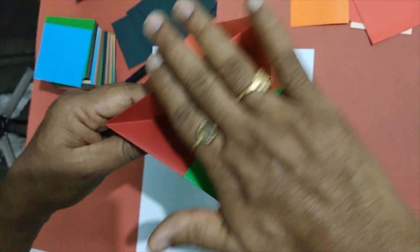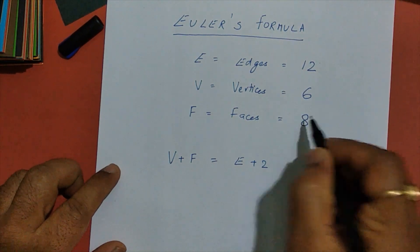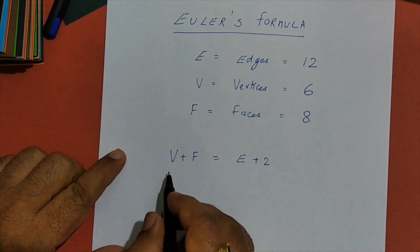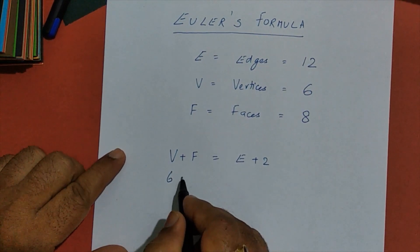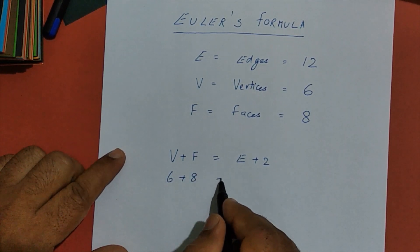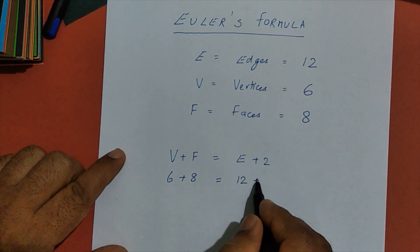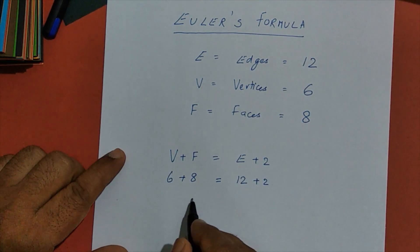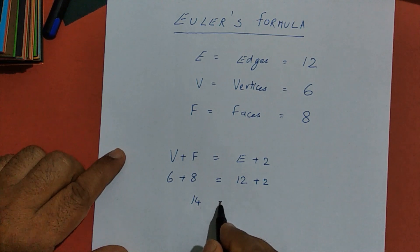Coming to Euler's formula. Vertices plus faces is equal to edges plus two. We have substituted the values we have found. And we are able to prove Euler's formula with our octahedron.